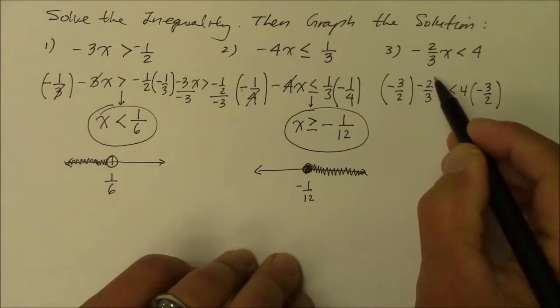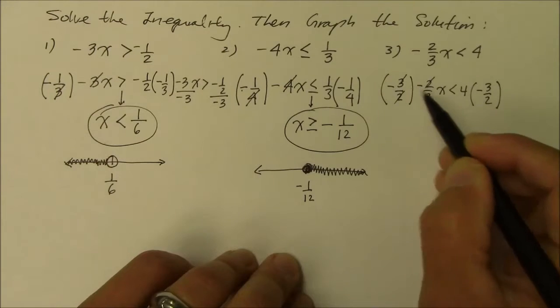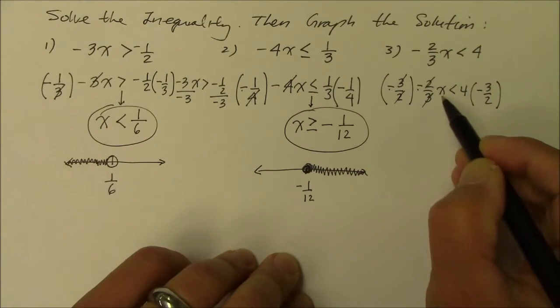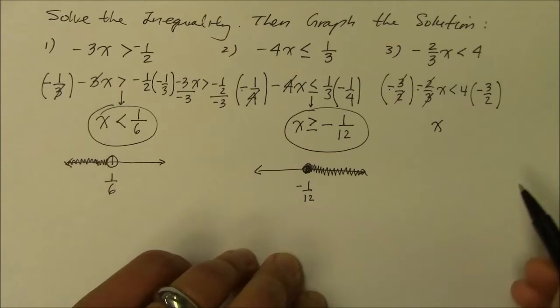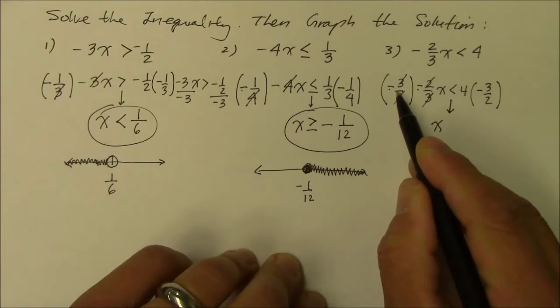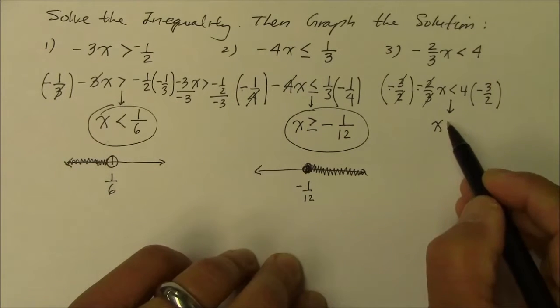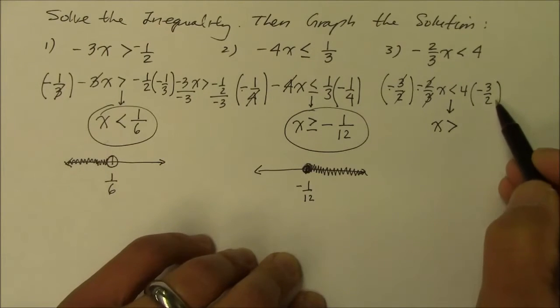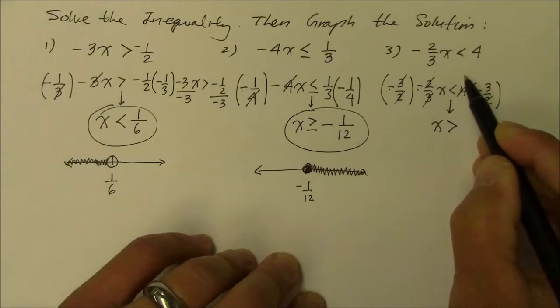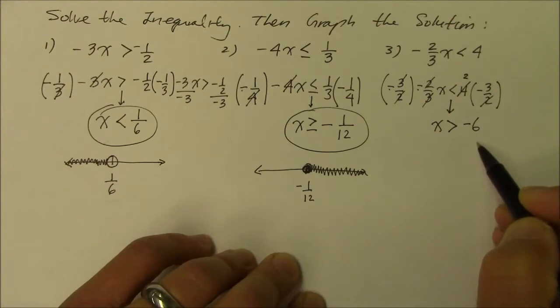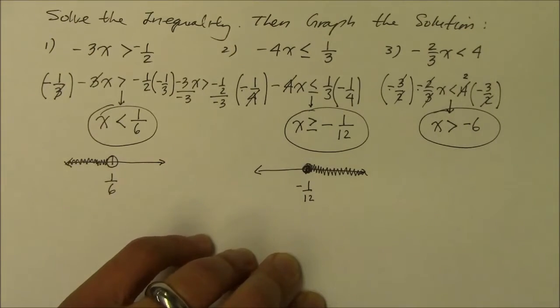So, on the left side, the 2 and the 2 simplifies. The 3 and the 3 denominator simplifies. Negative and negative becomes a positive 1x. And, I have to change the direction of the inequality because I'm multiplying a negative. So, it becomes now greater than. And, on the right side, the denominator 2 reduces the 4 twice. Therefore, 2 times negative 3 is negative 6 over 1 or simply negative 6. There's my numeric answer.